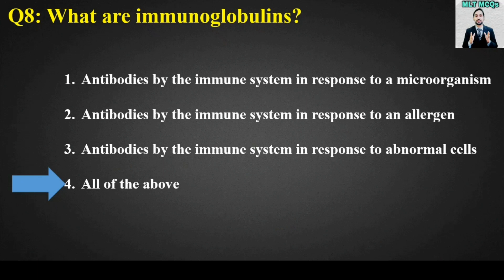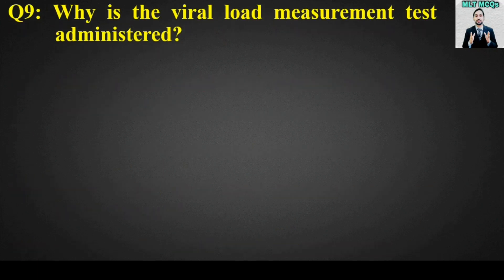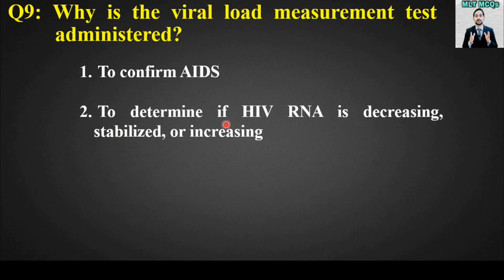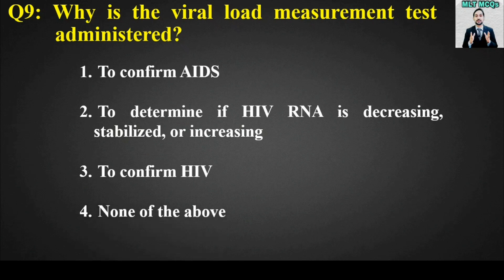MCQ number 9: Why is the viral load measurement test administered? Options are: to confirm AIDS, to determine if HIV RNA is decreasing, stabilized, or increasing, or to confirm HIV. The right answer is option number 2 — to determine if HIV RNA is decreasing, stabilized, or increasing.